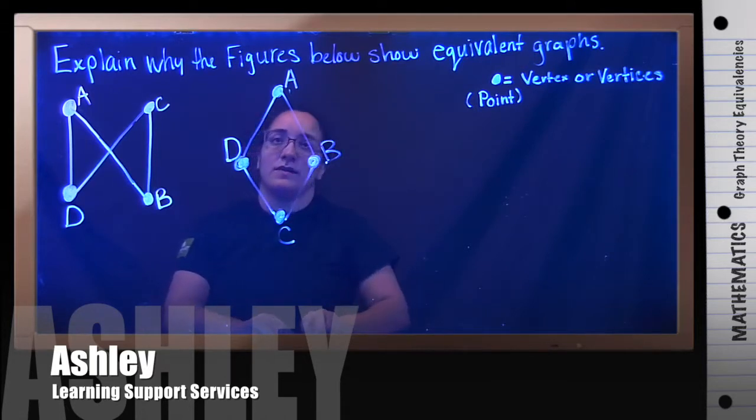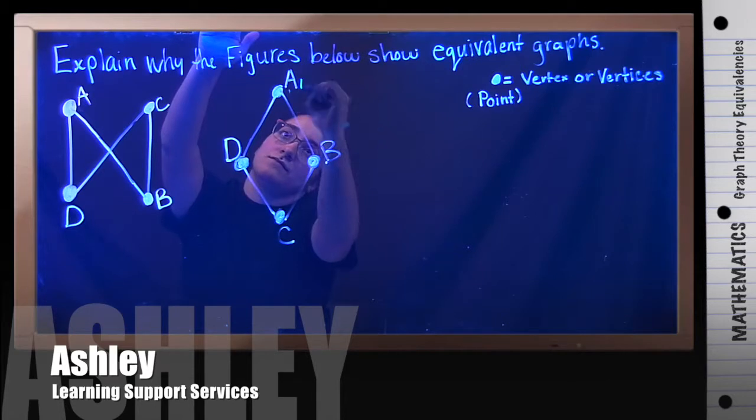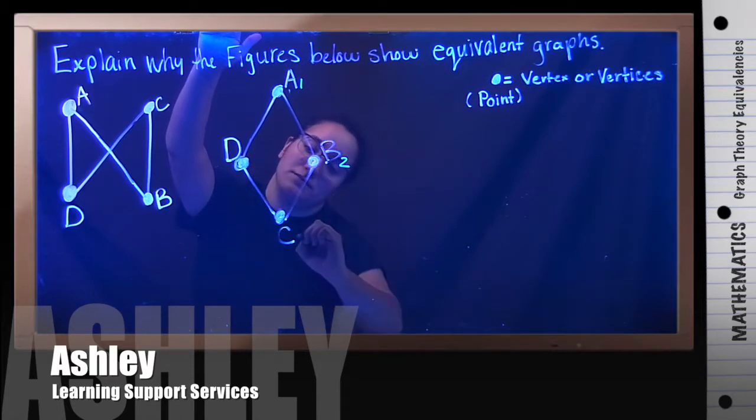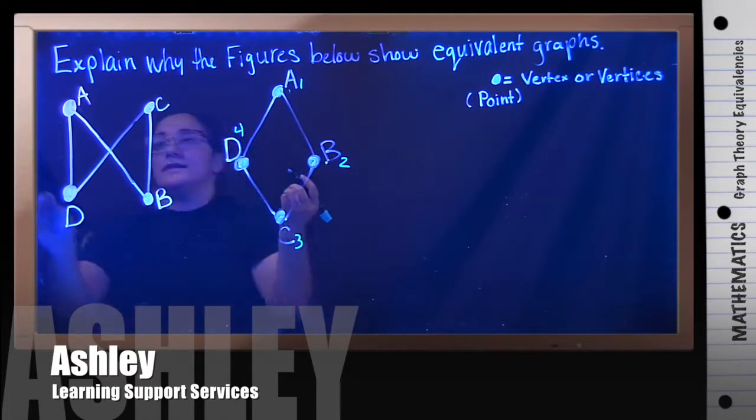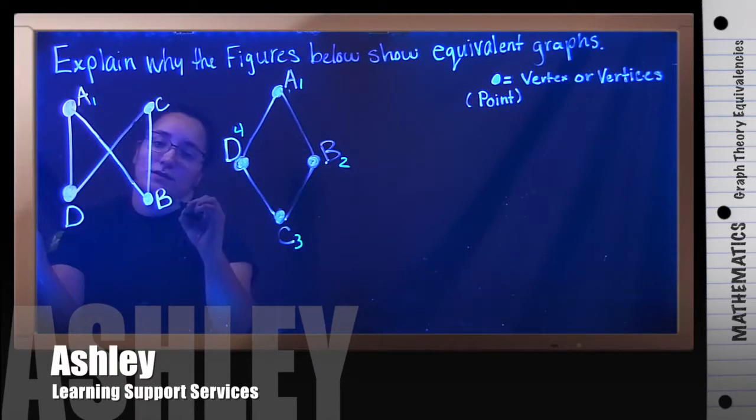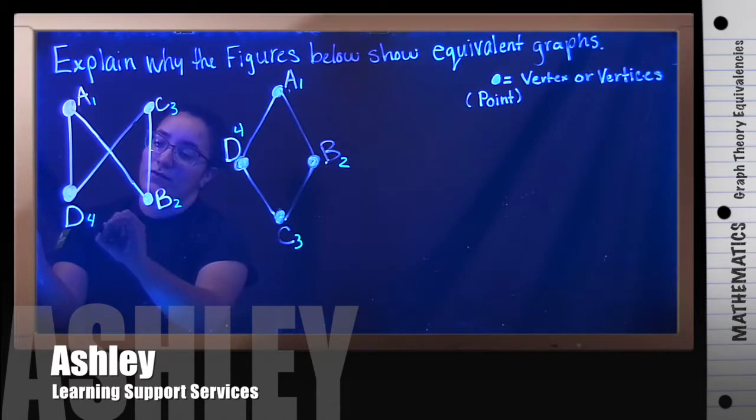Let's look at this first one. It has one, two, three, four points. And this one has one, two, three, four.